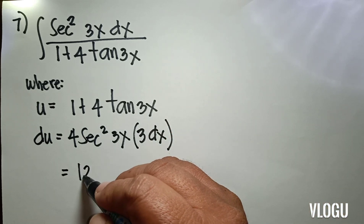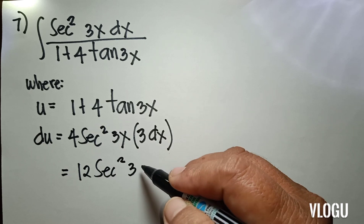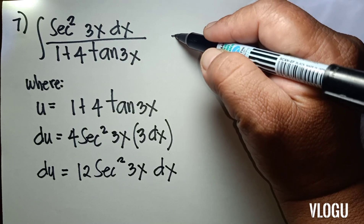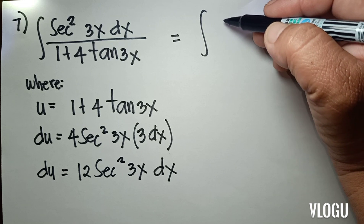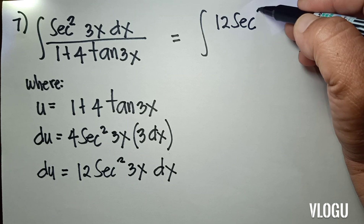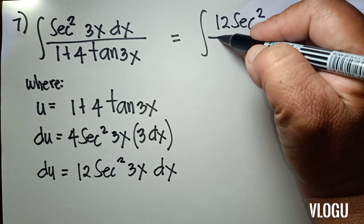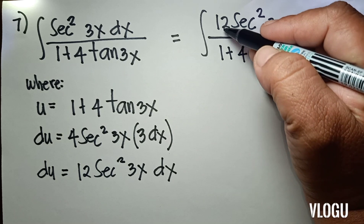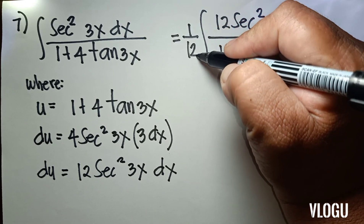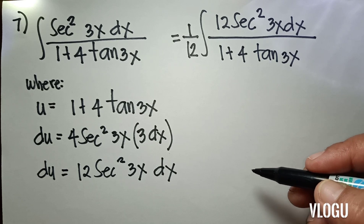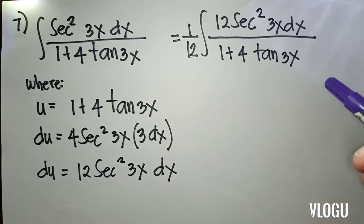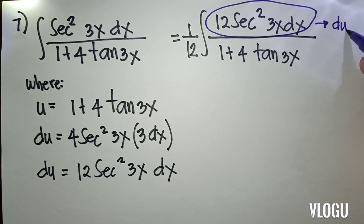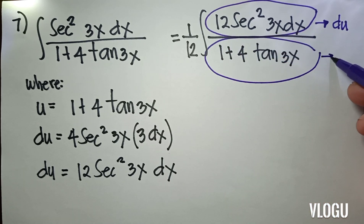So therefore, we have the integral with du equal to 12 sec²(3x) dx in the numerator, over 1 plus 4 tan(3x). We multiplied 12 for our du, so we multiply 1/12 outside. This is now our du. We have a form of du over u.